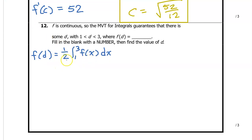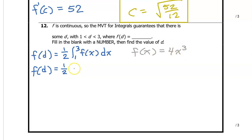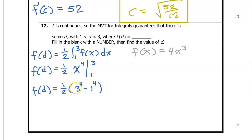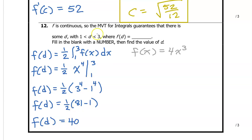Remember that f of x equals 4x to the third power. In order to evaluate this definite integral, we need to first find the antiderivative of f. Increasing the exponent by 1 gives x to the fourth power, and dividing by that new exponent cancels out the 4 in the front, so we just have x to the fourth power. Applying the limits of integration from 1 to 3, we find the value at 3 minus the value at 1, which is one half of 81 minus 1, so that's one half of 80. Therefore f at d equals 40 for some d on this interval.